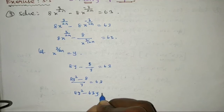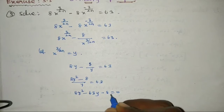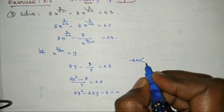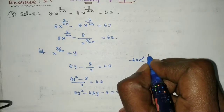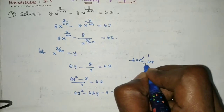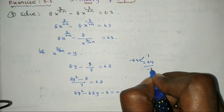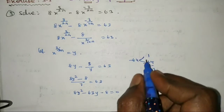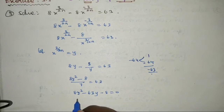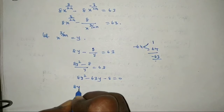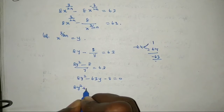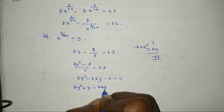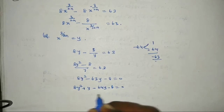To factorize 8y squared minus 63y minus 8 equal to 0, we need two numbers that multiply to minus 64 and add to minus 63. Those are 1 and minus 64. So: 8y squared plus y minus 64y minus 8 equal to 0.